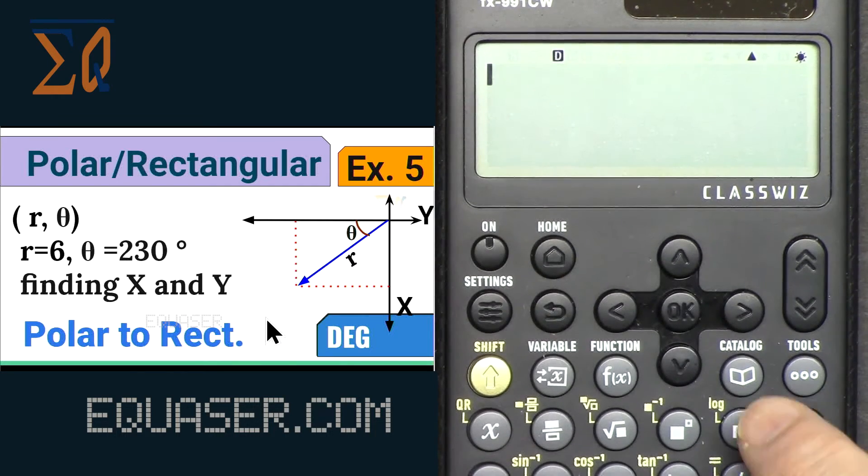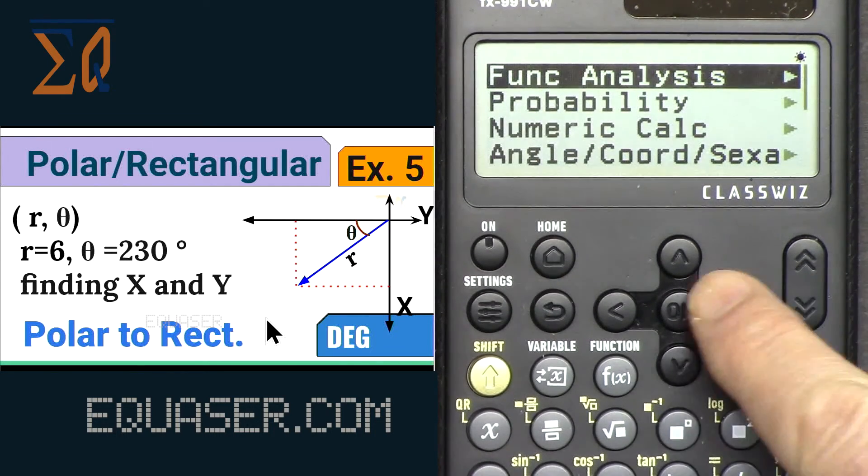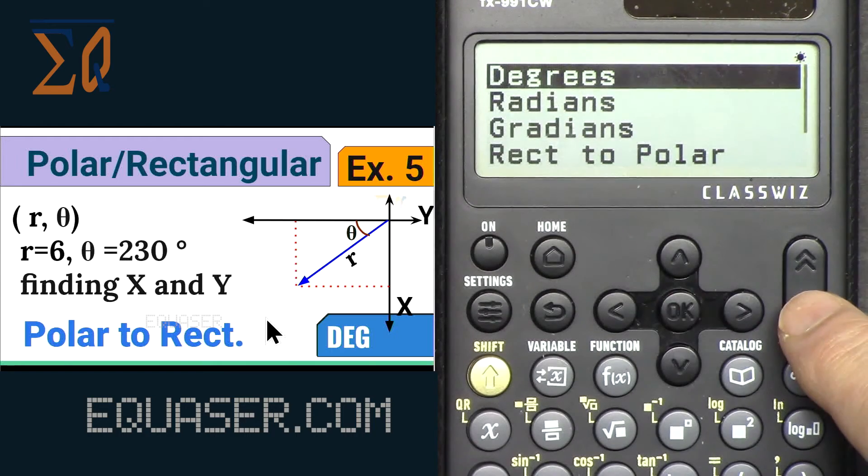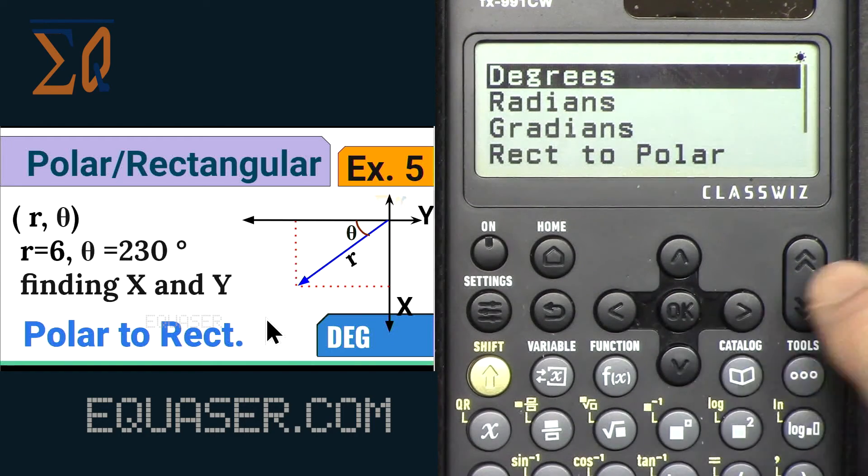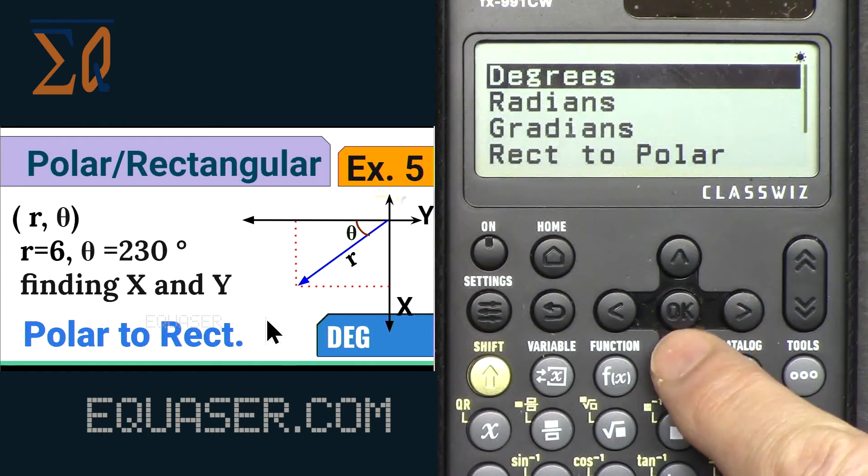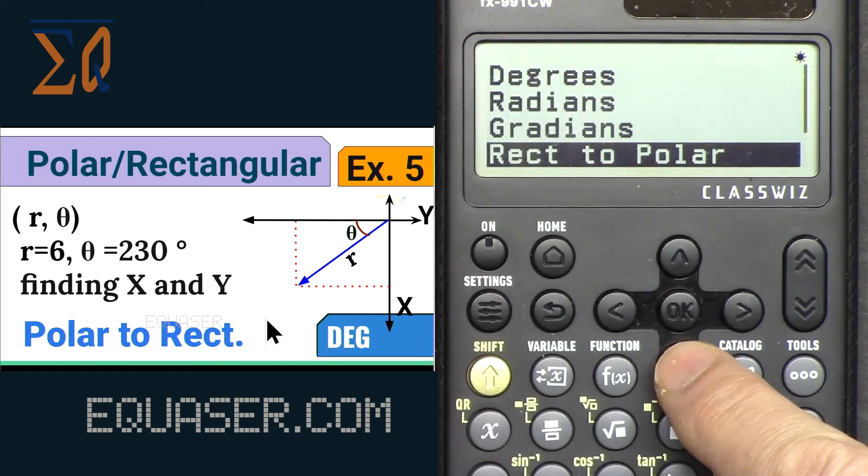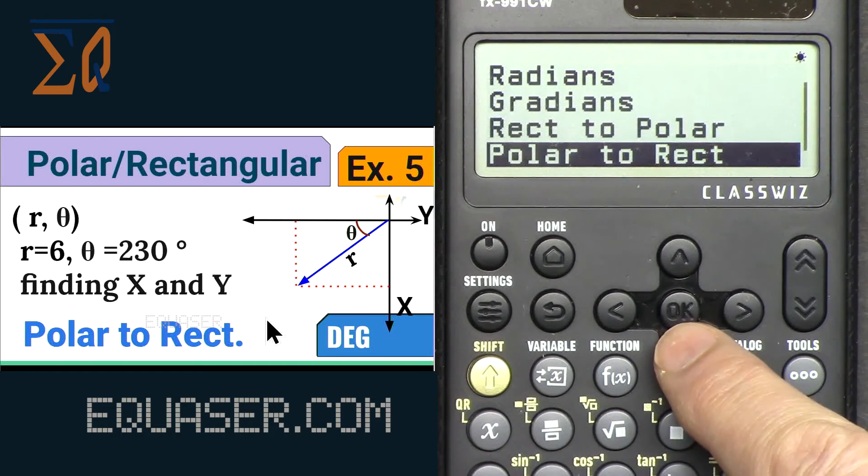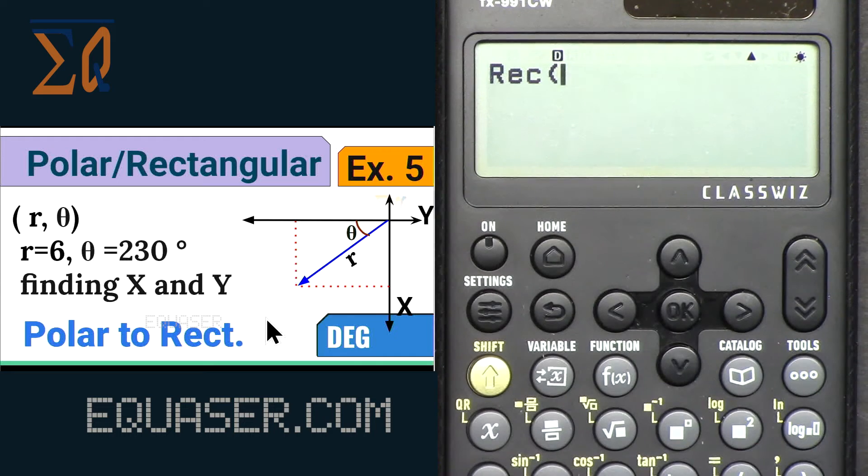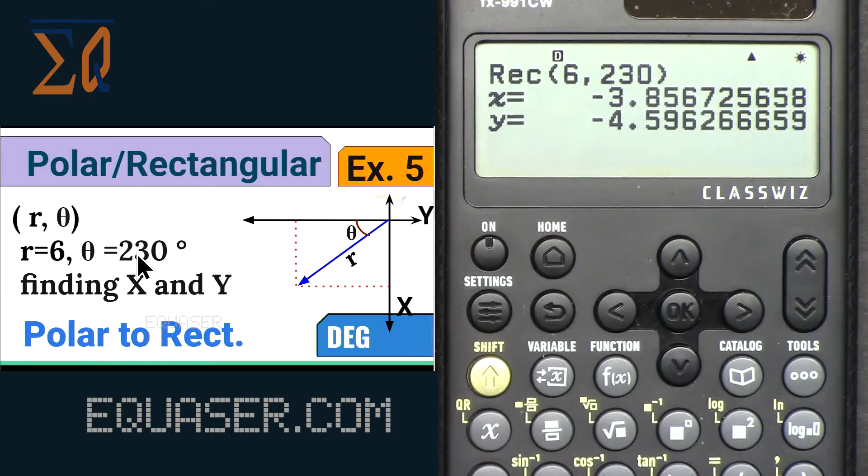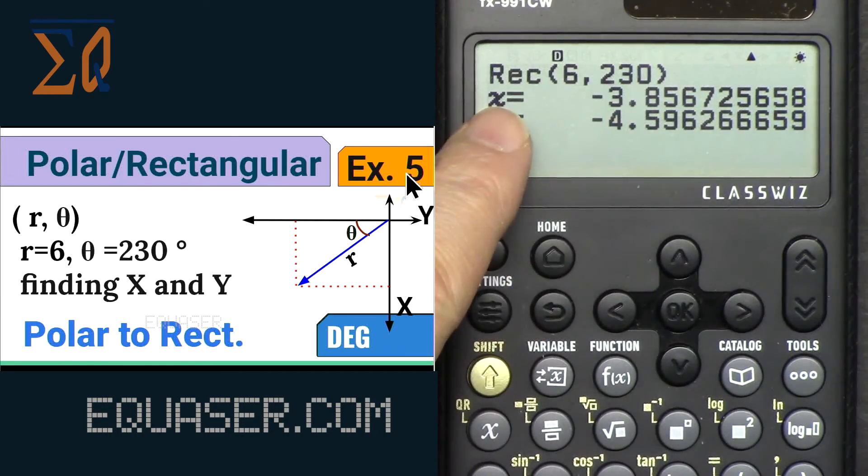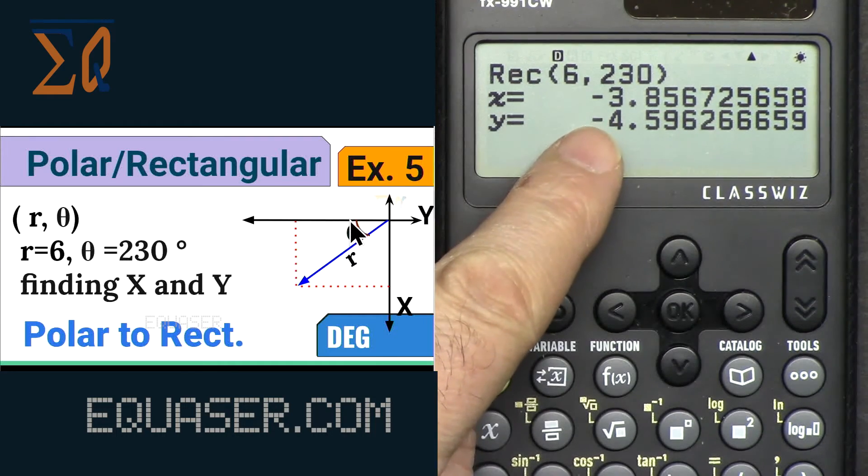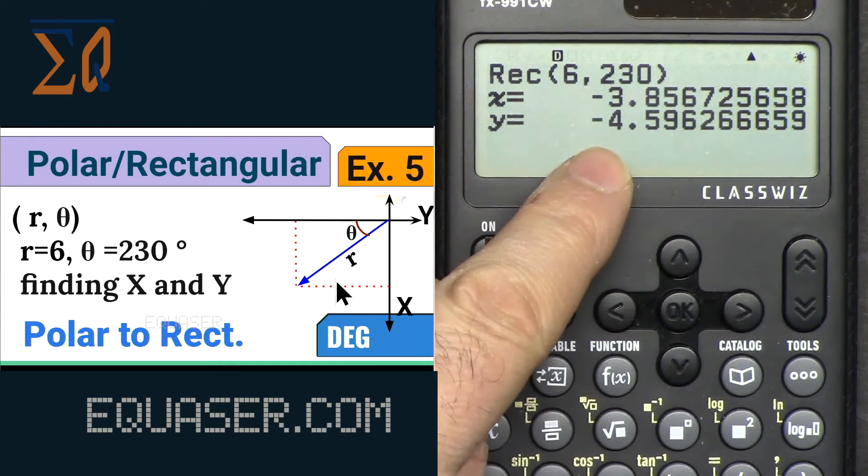Press Catalog and then go down. We have Polar to Rectangular. 6 and 230, Alpha comma, 230, close. Now we're getting proper value. As you can see X is -3.8 and Y is also -4.5, which is the correct answer. Without 230 you will get incorrect answer.